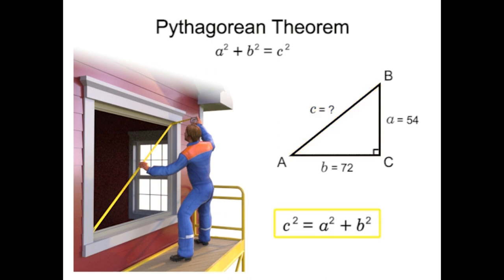First, isolate the variable C by taking the square root of both sides. Then substitute in the values for A and B. Finally, reduce the expression and simplify. In this example, the hypotenuse of the triangle should be 90 inches. If the diagonal of the window measures 90, then the carpenter knows the window will be square.